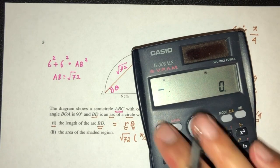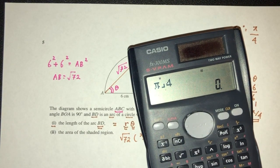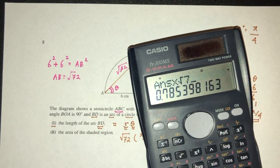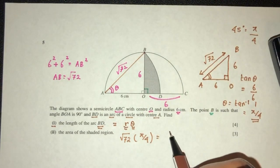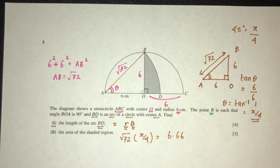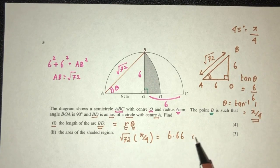So let's evaluate this. π/4 times √72, that should be 6.66 for the length of arc BD. That is in centimeters.